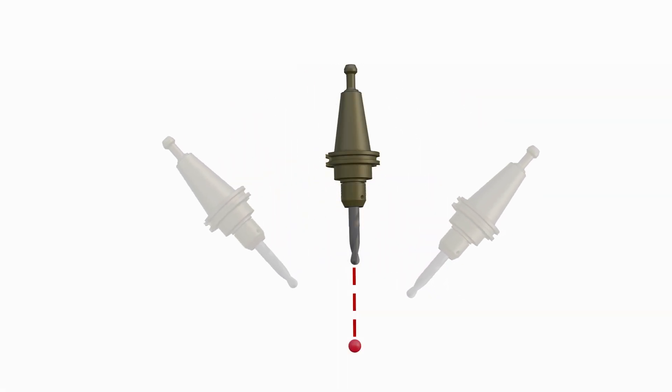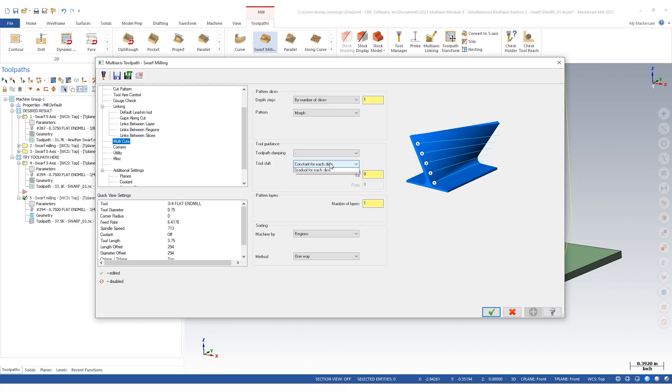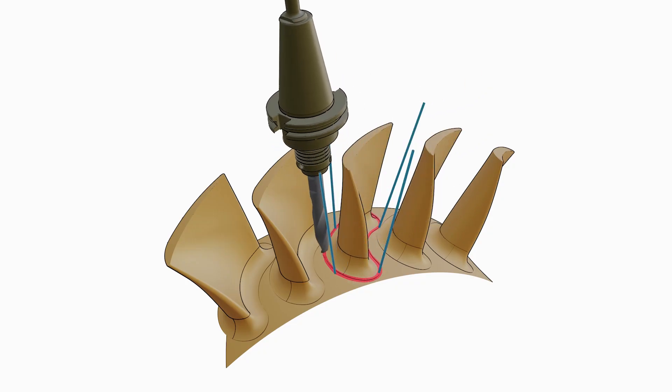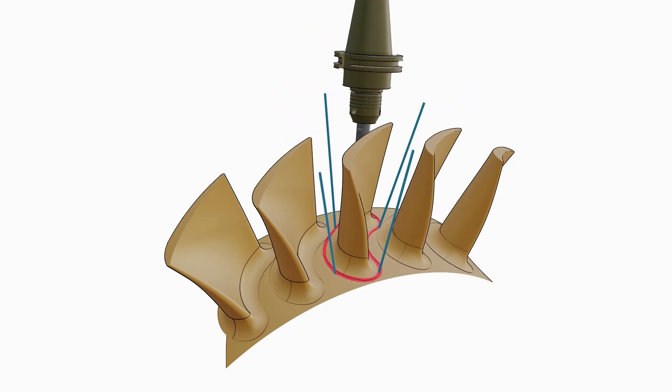This course will focus on delivering fundamental knowledge in multi-axis programming. You will learn multi-axis control options, apply machining strategies to promote efficiency, and program positional and simultaneous 5-axis toolpaths. My goal is to explore with you the various toolpaths, options, and settings within the program so we can better understand why they exist.